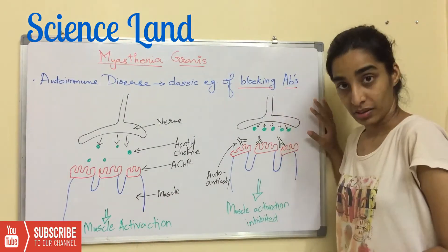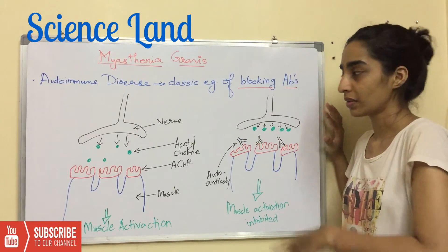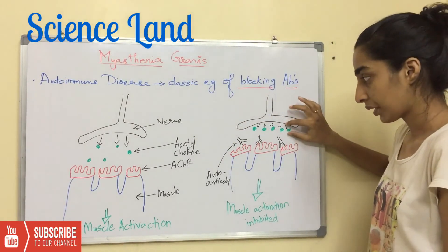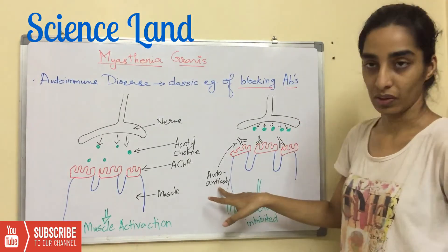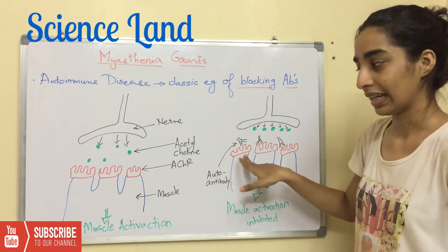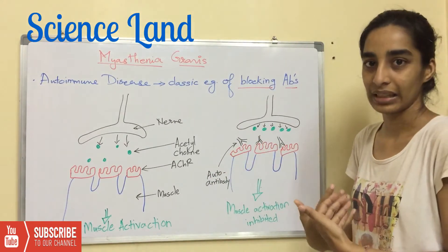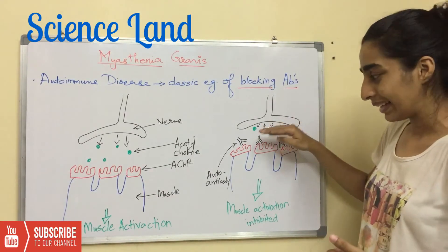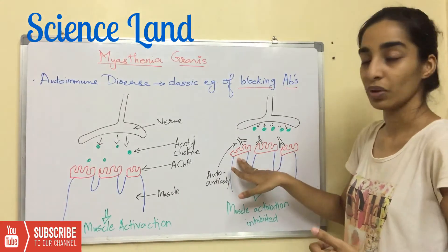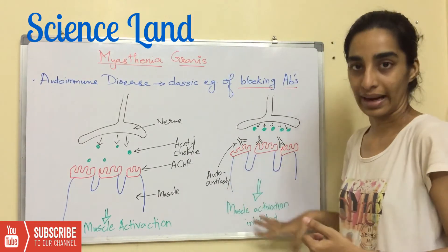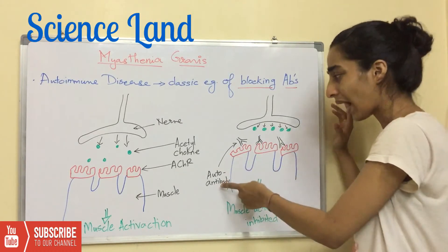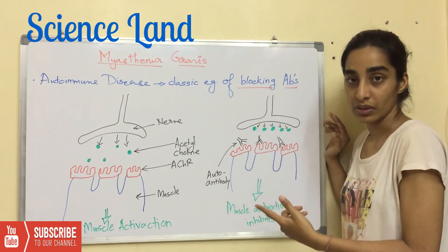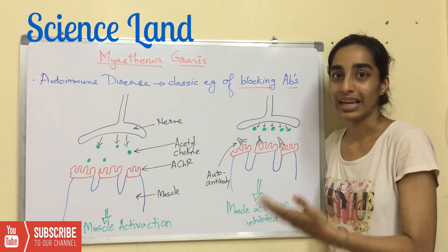But in a case where the person is suffering from Myasthenia Gravis, the nerve will release acetylcholine molecules, but the patient produces autoantibodies which bind to the acetylcholine receptors, blocking the binding of the acetylcholine molecule. This inhibits muscle activation. At the same time, the autoantibody bound to the acetylcholine receptors induces complement-mediated lysis of the cell.